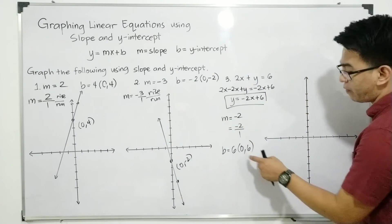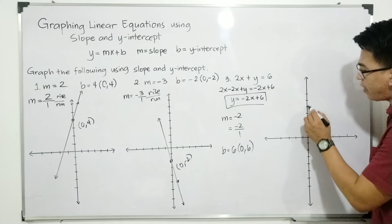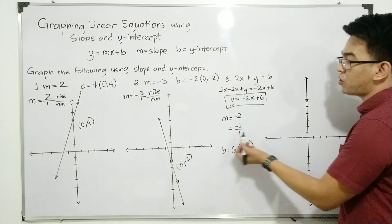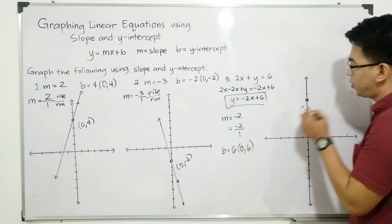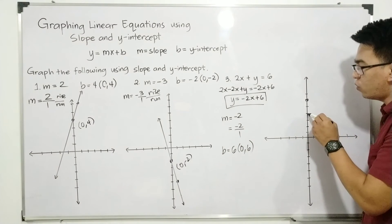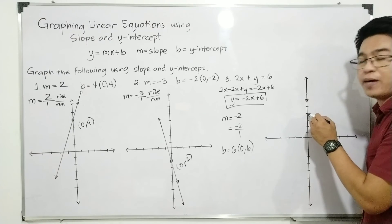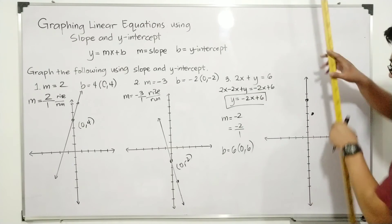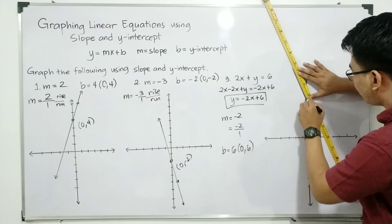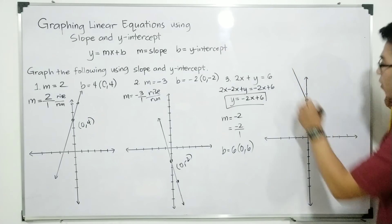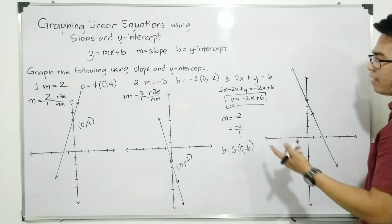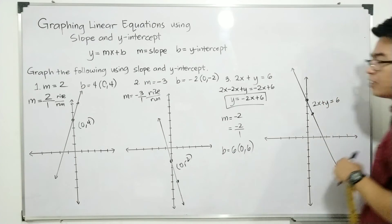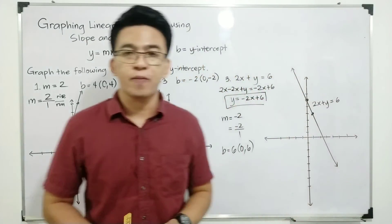Now we're able to graph this. We start with (0, 6): 0, 1, 2, 3, 4, 5, and 6 — here's the first point. As for the second point, we use the slope. Your rise is negative 2, so you will move 2 units downward: 1, 2. And since your run, which is 1, is positive, you will move 1 unit to the right. This is the location of the second point. We can now graph the linear equation using these 2 points and draw a straight line. You need to label it with the original equation: 2x plus y is equal to 6, signifying that that is the graph of the given equation.